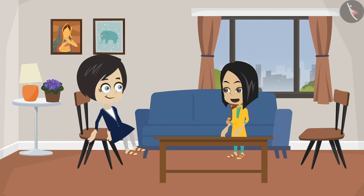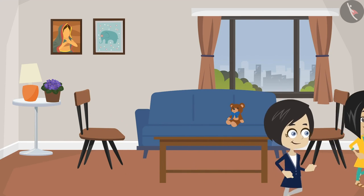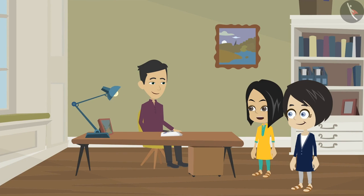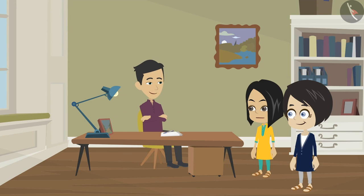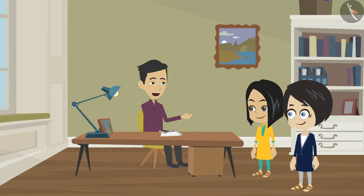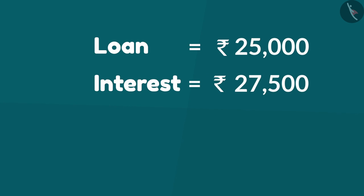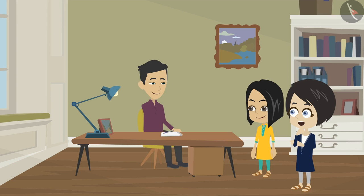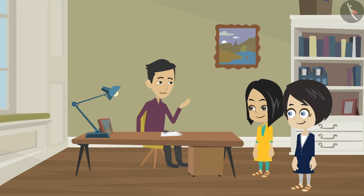Come on, let us ask my dad. Dad, Meena's dad took 25,000 rupees loan — then why does he need to pay 27,500 rupees as interest? No my girl, he won't be paying 27,500 rupees as interest. 27,500 is the total amount which is to be paid along with principal.